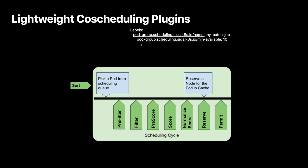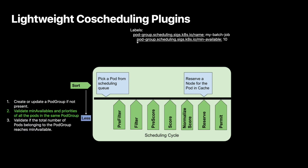The idea is it introduces two labels. The first label defines a group — you name it, like the example 'my batch jobs.' The second label describes and specifies the minimum number of pods that should be scheduled as a group. In order to support gang scheduling, we have to introduce multiple extensions at different stages. First is sorting the pods. When a pod is submitted to Kubernetes, it has to be sorted in the scheduling queue. Instead of doing pod-by-pod sorting, the plugin makes sure pods from the same group are sorted together, avoiding interleaving across different pod groups.